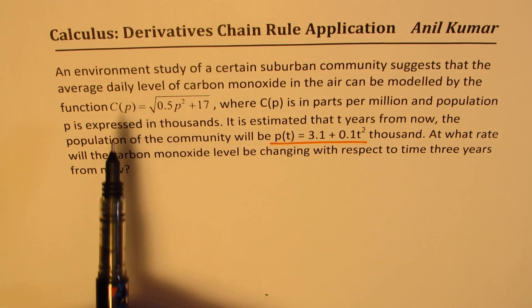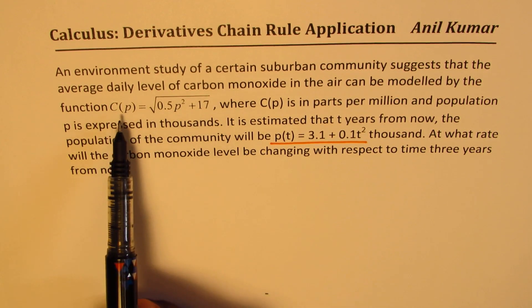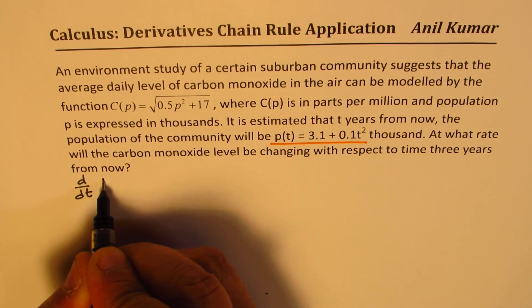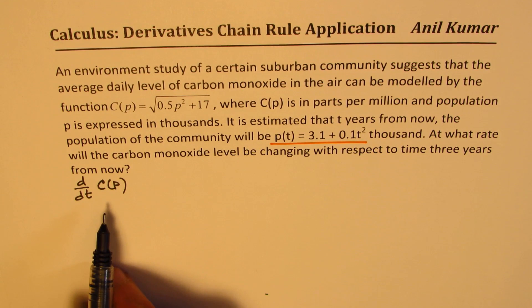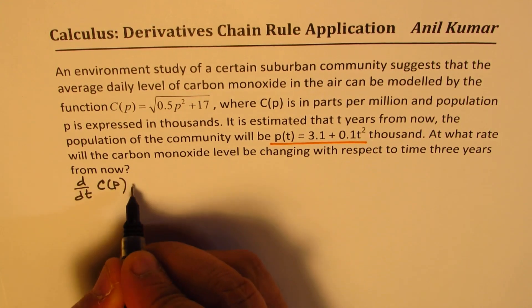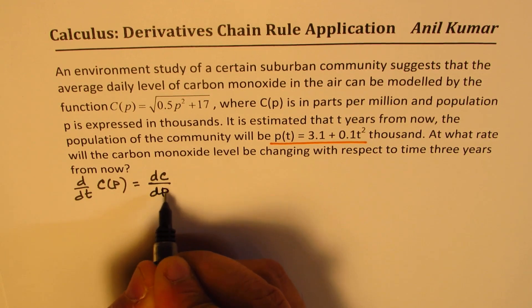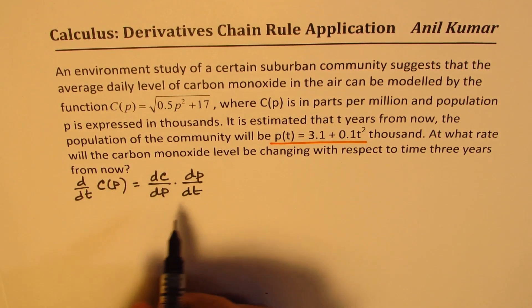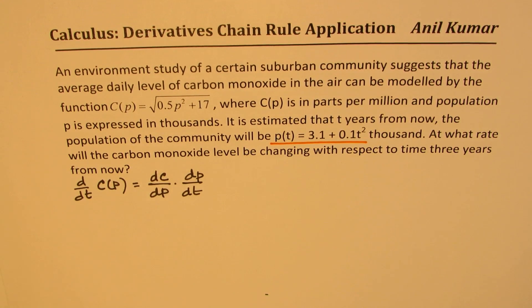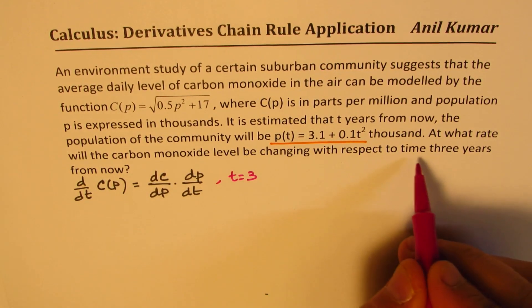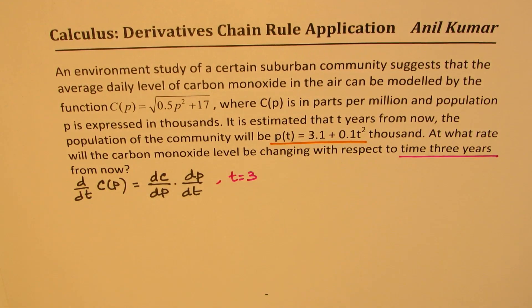So now we want rate of change of carbon monoxide with respect to time. So we'll find d/dt of C, but C is given with respect to population. So how could we do it? We'll use the chain rule to solve this. So we can actually differentiate C with respect to the population and the population function with respect to time. And this chain rule gives us the answer. And all this should be done for t = 3, after three years.